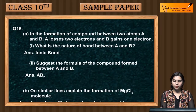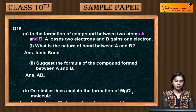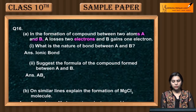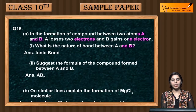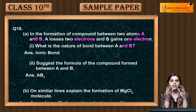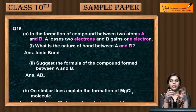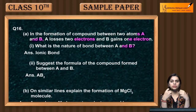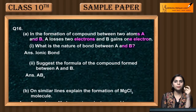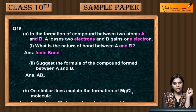In the formation of a compound between two atoms A and B, A loses two electrons and B gains one electron. What is the nature of bond between A and B? When electrons are lost or gained, this means an ionic bond is formed. So the bond between A and B will be an ionic bond.